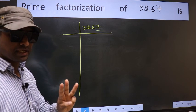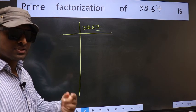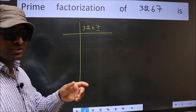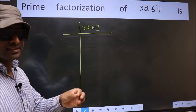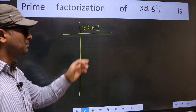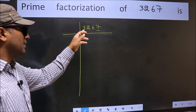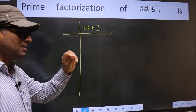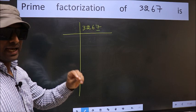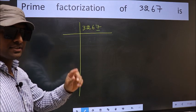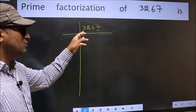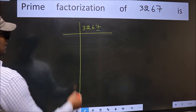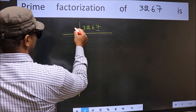The next prime number is 3. To check divisibility by 3, we should add the digits. That is 3 plus 2 plus 6 plus 7. We get 18, and 18 is divisible by 3. So this number is also divisible by 3.